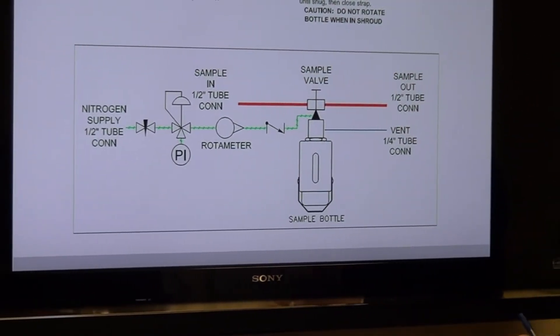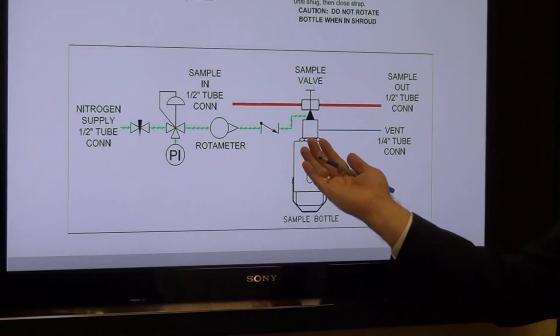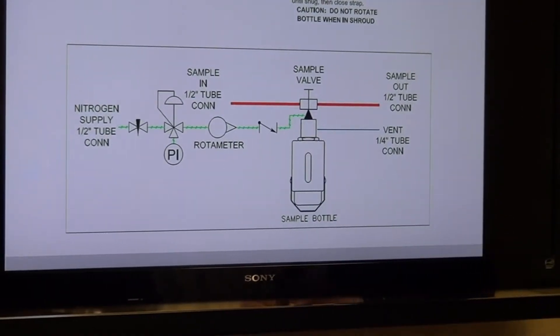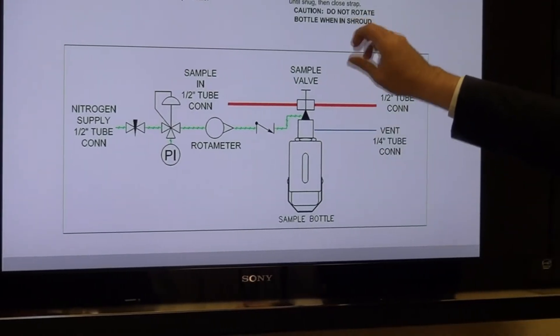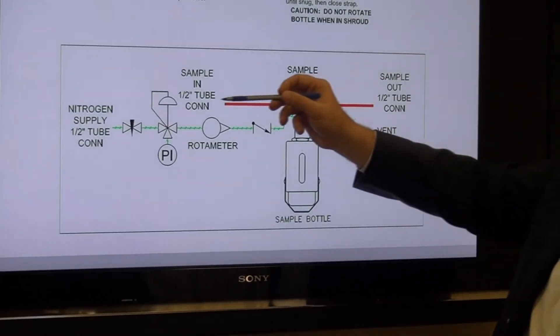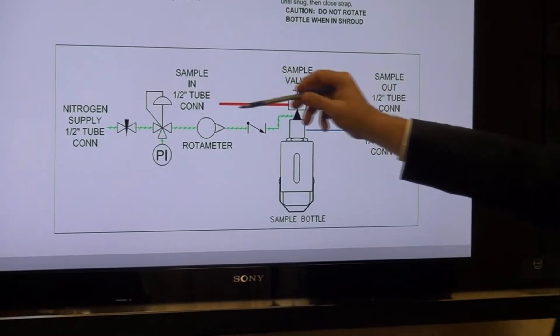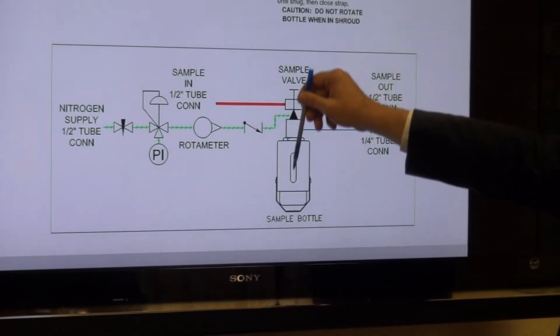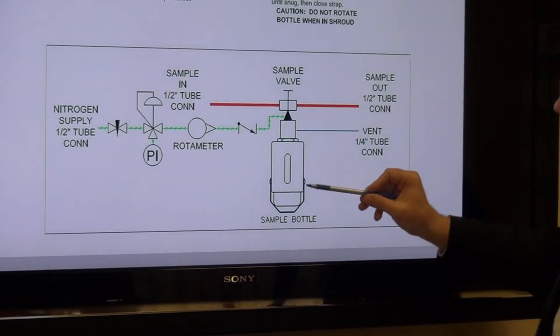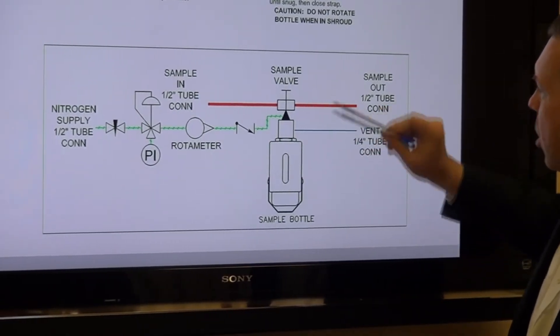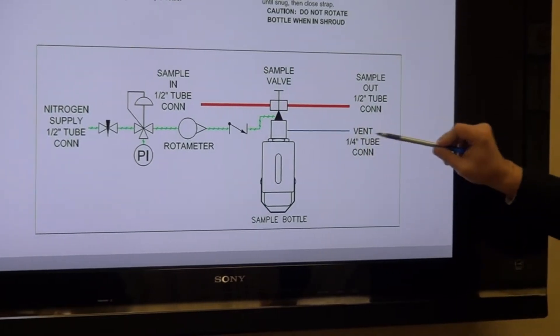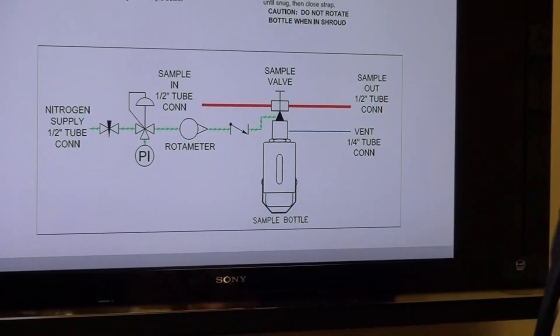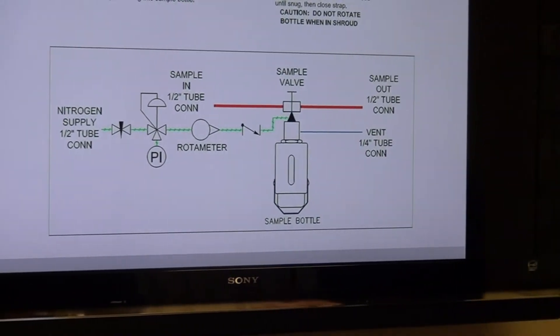When the operator is ready to take a sample and has installed the sample bottle as I showed you a moment ago, then he will operate that single valve on the front, will open it up. That will now allow the sample to flow in and down through the process needle into the bottle. As I told you before, the vapor then will escape through that vent needle, and the vent line is typically tied to the flare header system within a plant.